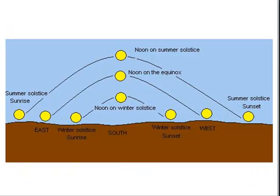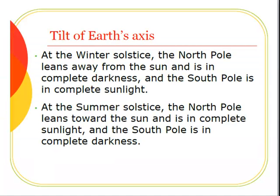You can see the position of the Sun on the summer solstice at noon — it's really high in the sky. The summer solstice is the longest day of the year. The winter solstice is the shortest day of the year, and you can see the Sun is much lower in the sky. At the winter solstice, the North Pole leans away from the Sun and is in complete darkness, and the South Pole is in complete sunlight. At the summer solstice, the North Pole leans toward the Sun and is in complete sunlight, and the South Pole is in complete darkness.